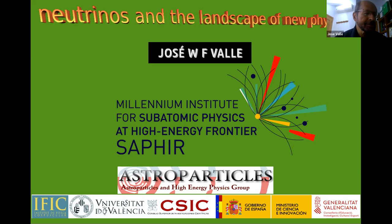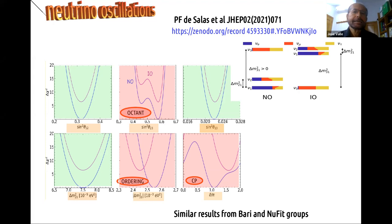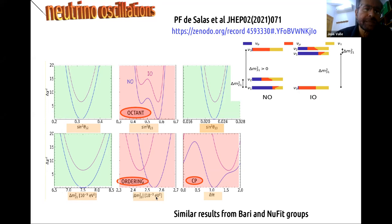My task today is to illustrate how neutrinos may serve as guidance for exploring the landscape of new physics. I start from the status of neutrino oscillations. Most neutrino phenomena are nicely described in terms of the three neutrino paradigm described by six oscillation parameters: three mixing angles describing solar, atmospheric, and reactor conversions, and below that, two independent splittings and the CP phase.